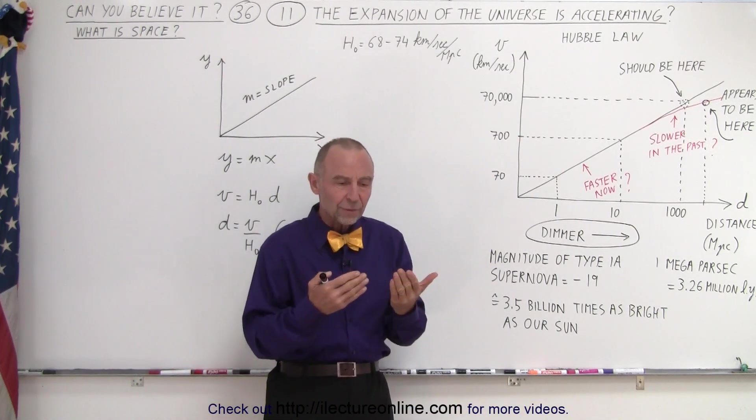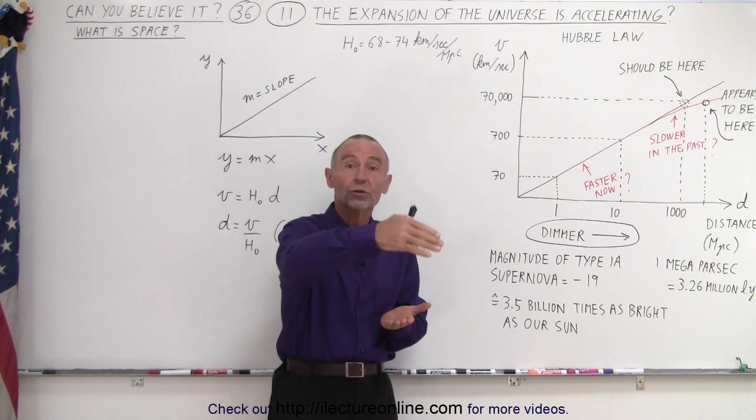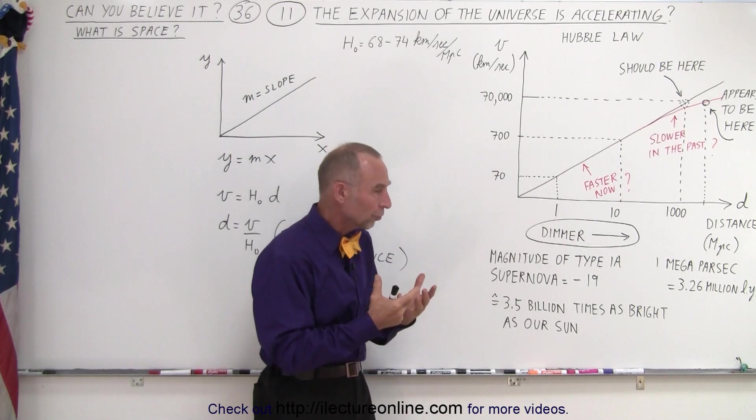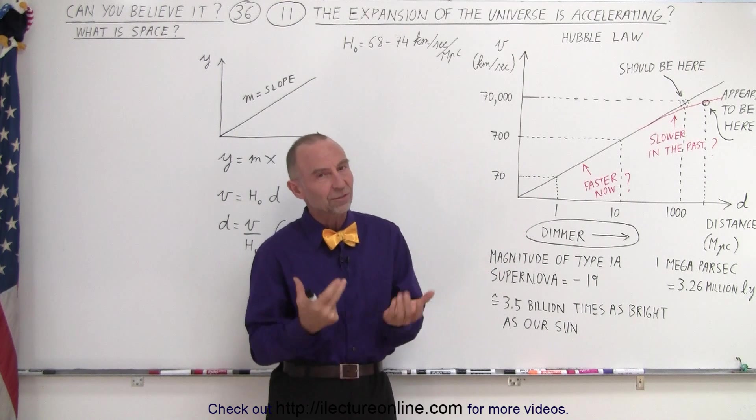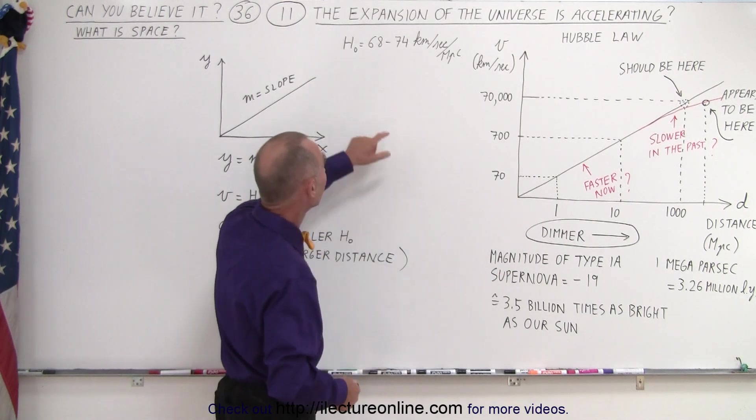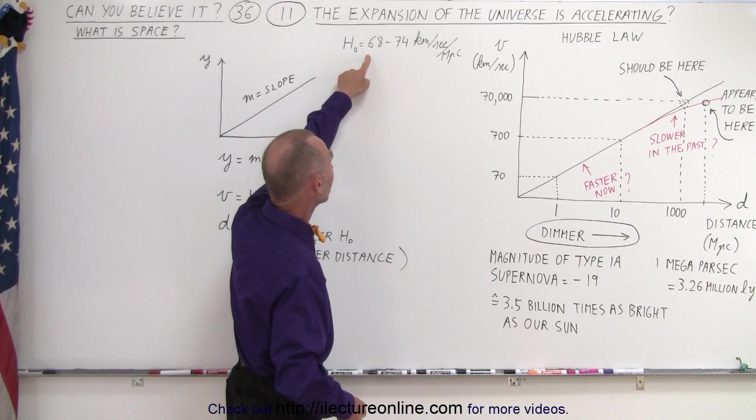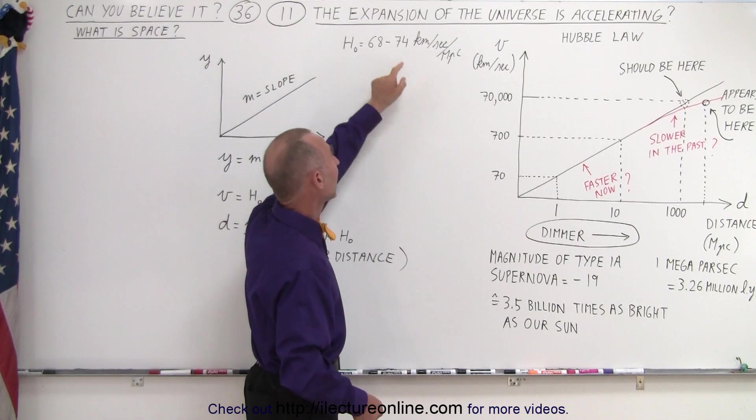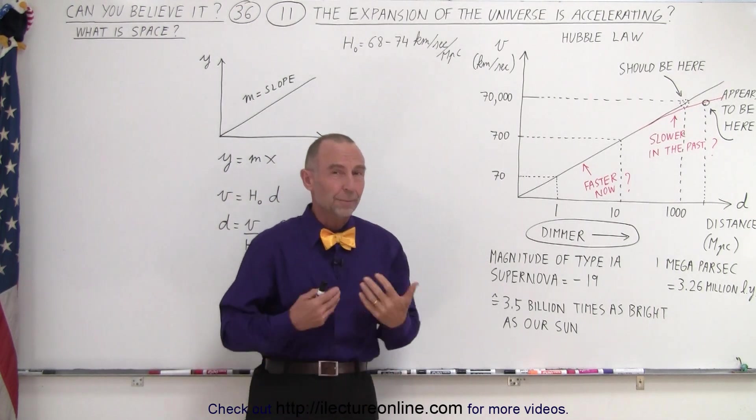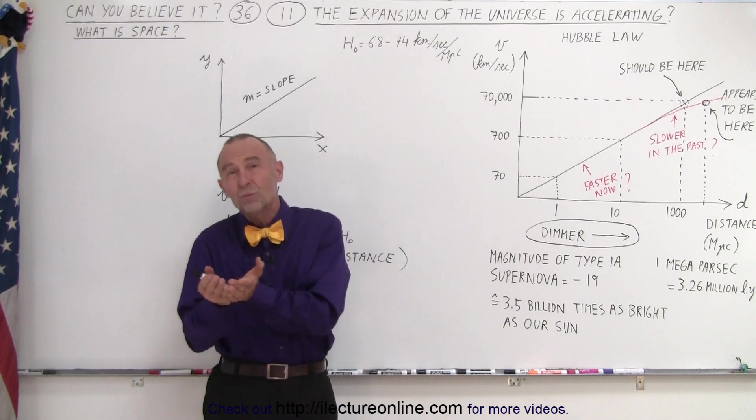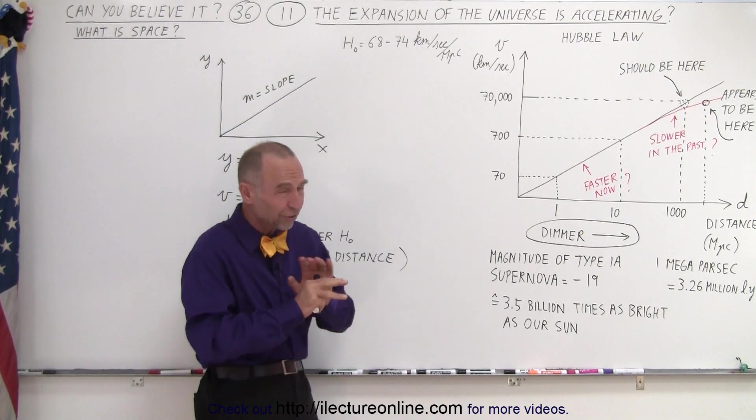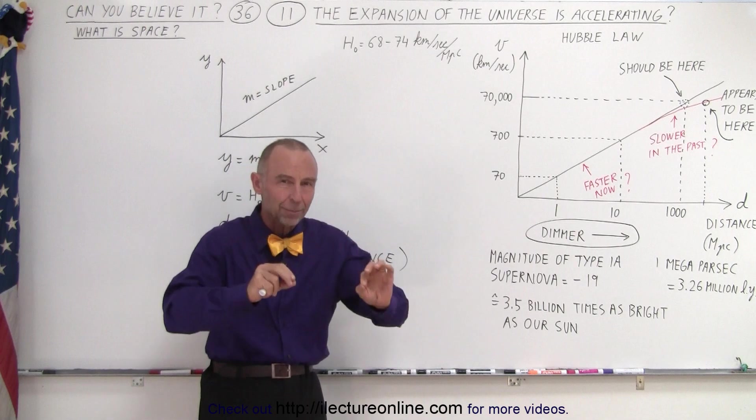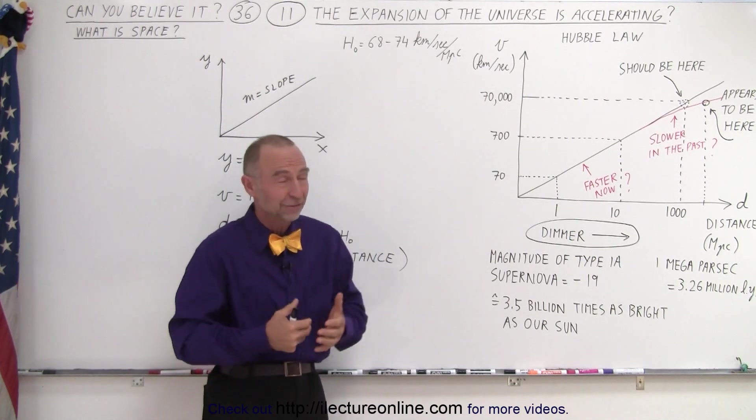We've been trying to verify this Hubble constant holds true for all distances. Studies are still ongoing. Currently, estimates place the Hubble constant somewhere between 68 and 74 kilometers per second per megaparsec, depending on which recent research you look at. It's still not an established exact number. We're still trying to figure that out.